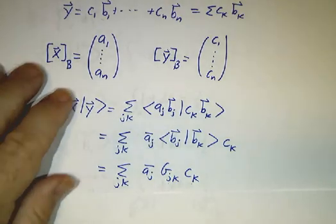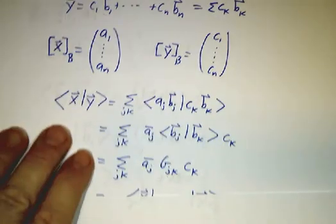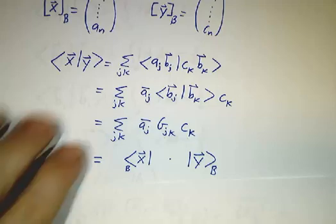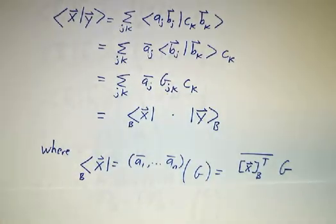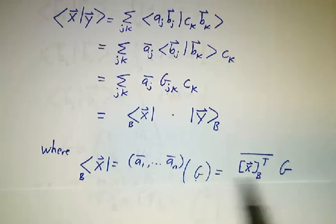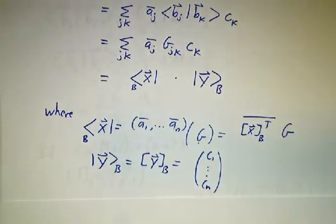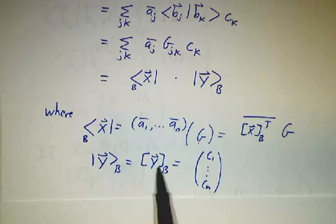That's exactly the sum of the product of a row and a column, where the row is a_1 bar through a_n bar times g, and that's what we called the coordinates of the bra. And the column is just the coordinates of the ket, which are the coordinates of the vector. Kets are vectors.